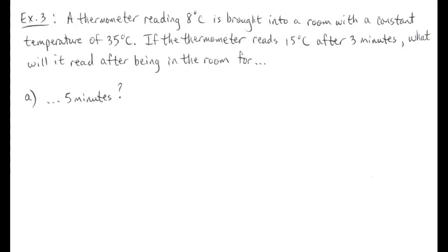We have a thermometer that reads 8°C and is brought into a room at a constant temperature of 35°C. The thermometer came from a cooler environment into a hotter one. If the thermometer reads 15°C after three minutes, what will it read after five minutes? We expect K to be positive since we're heating, and we'll confirm that when we solve for K. For part A we'll let t = 5.